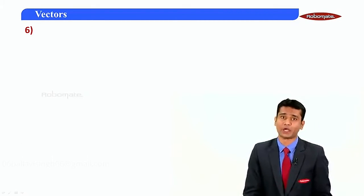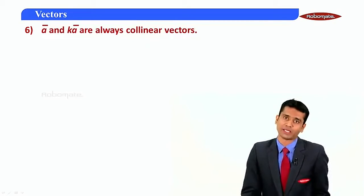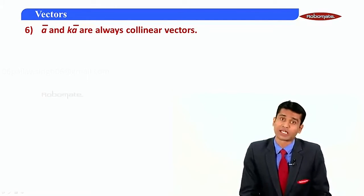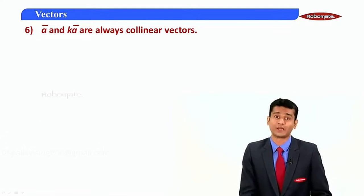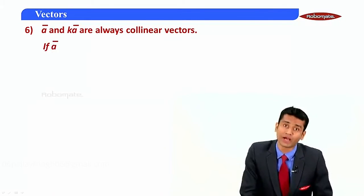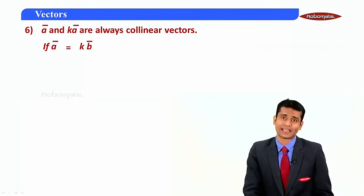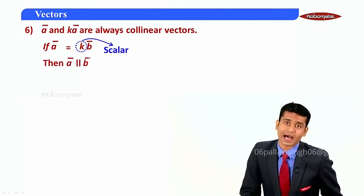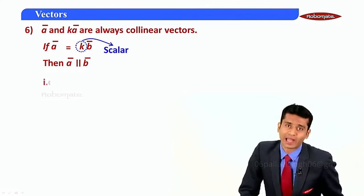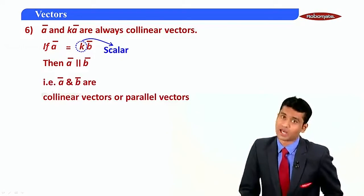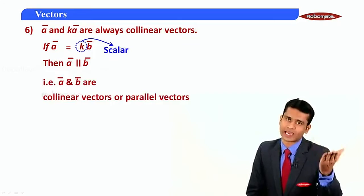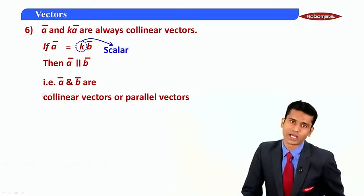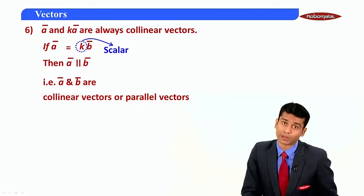Now, a very important property of scalar multiplication — please keep this in mind: a-bar and k·a-bar are always collinear vectors. A vector and its scalar multiple are always collinear, meaning parallel. So if a-bar is a scalar multiple of b-bar, then a-bar is parallel to b-bar, and a-bar and b-bar are collinear vectors.